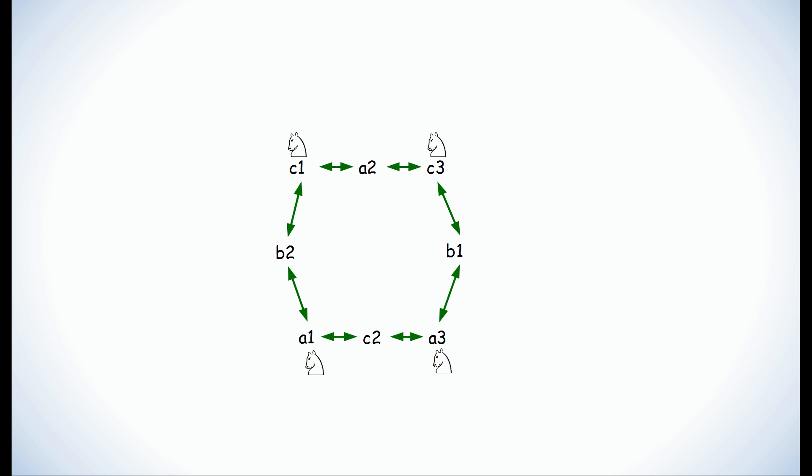The only way that we can get the knight on a1 and c3 to swap positions and c1 and a3 to swap positions is we're going to have to rotate this graph either clockwise or counterclockwise four spaces. This means that each knight is going to have to move over four spaces and this puzzle can be solved, and it can be solved in a minimum of 16 moves.